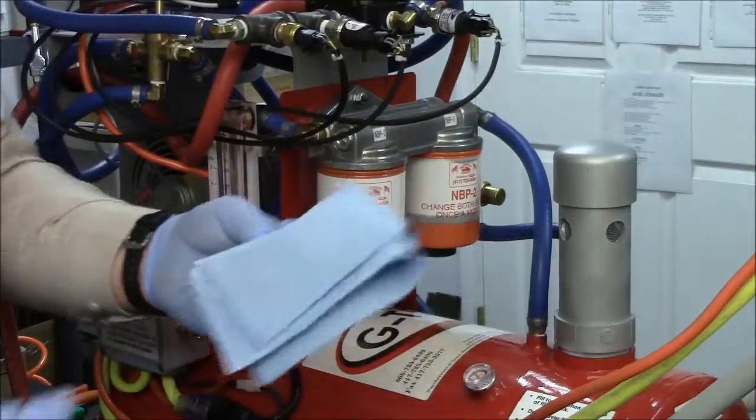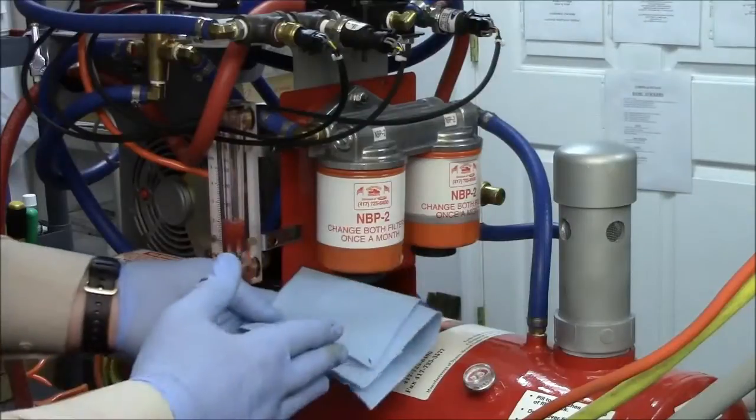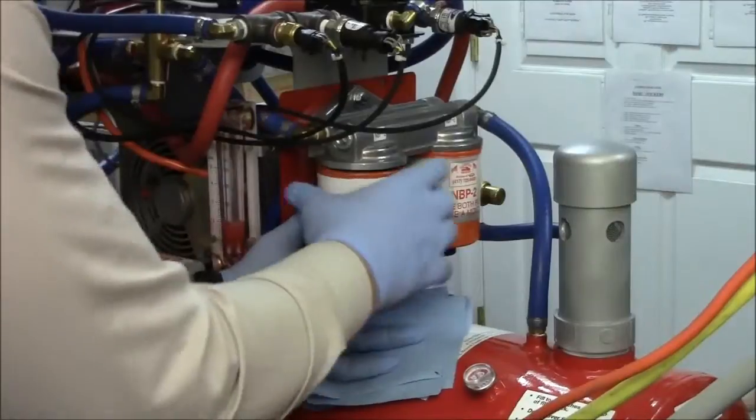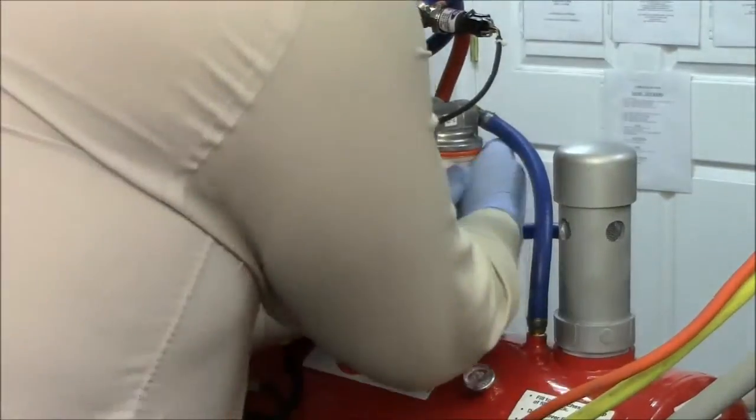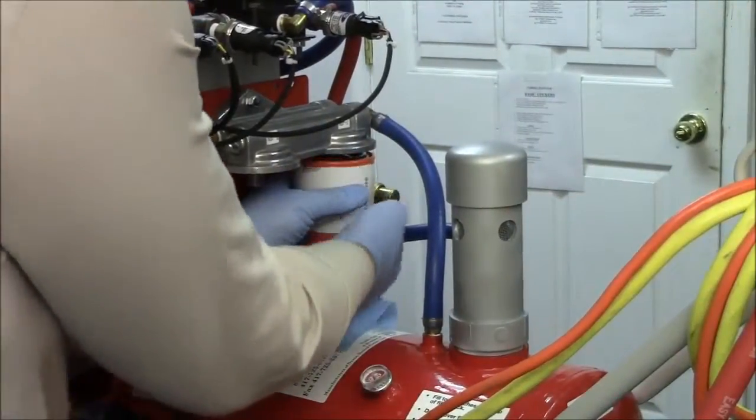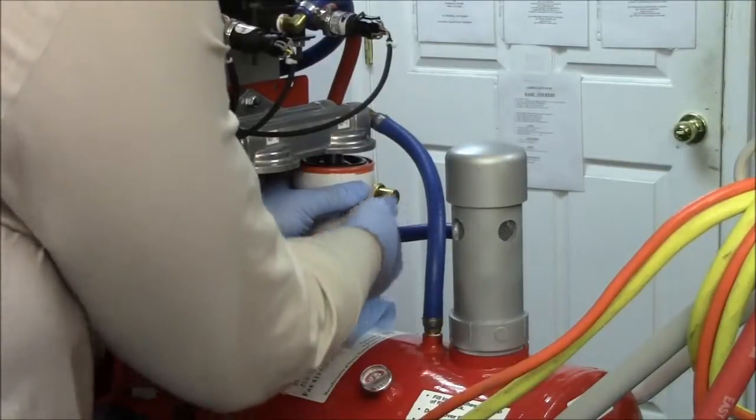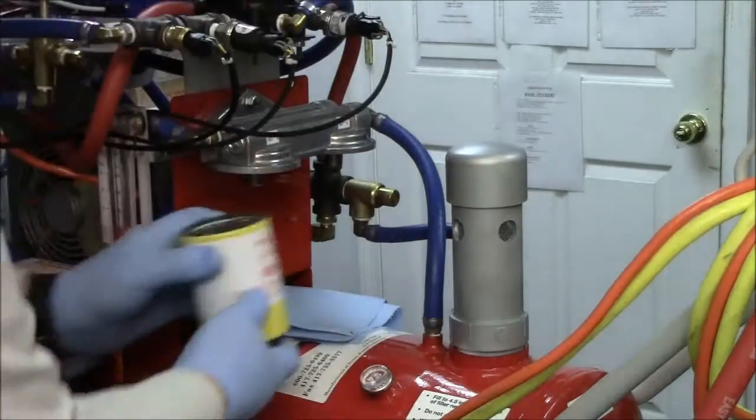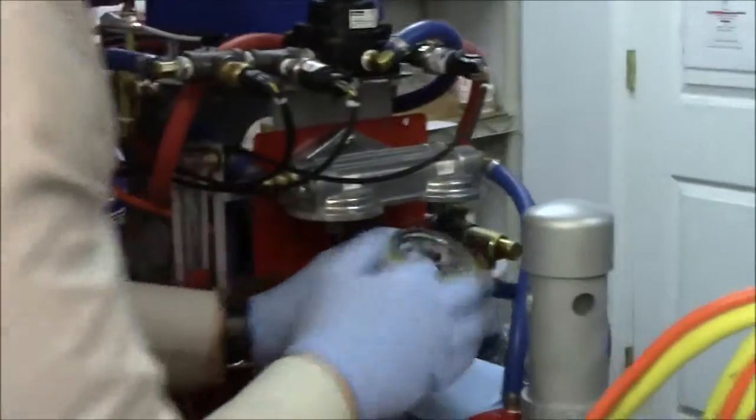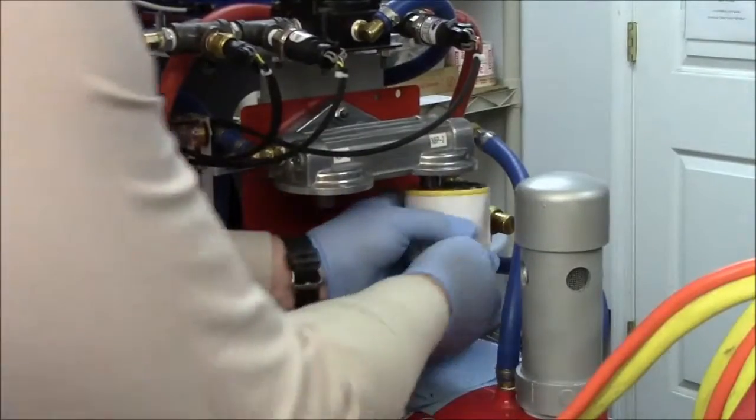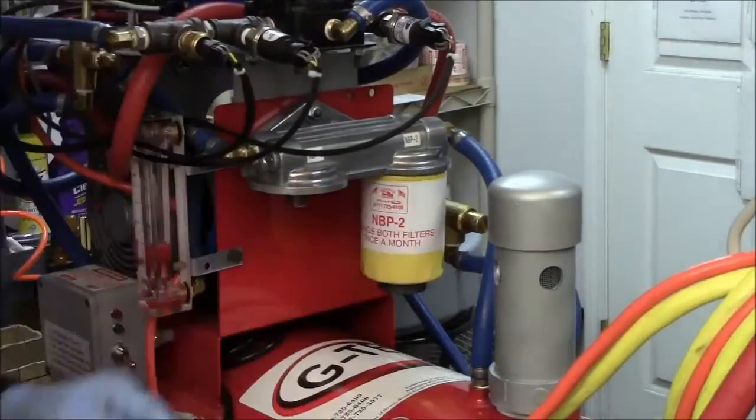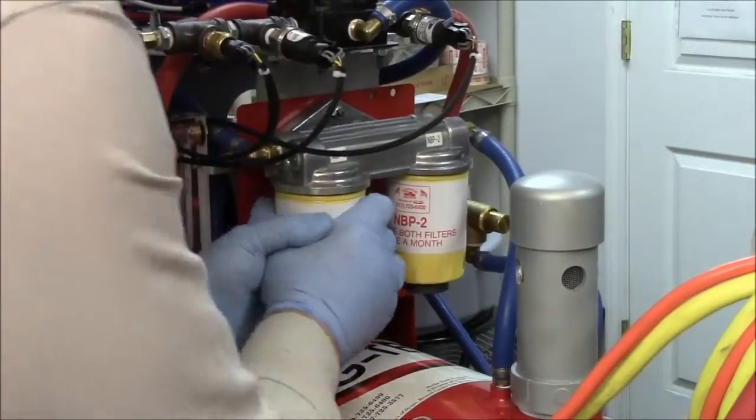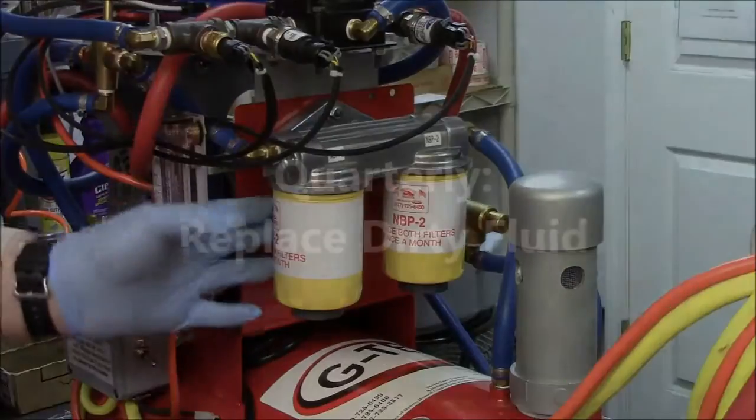Now have a cleaning cloth handy, even though we've blown the oil out of this it's still going to drip a little bit. So just put your cloth there. And then again spin them back on. Put a little oil around the ring. And that's changing your filters.